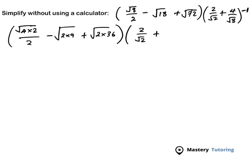Plus 4, which is written as 2 times 2, over 8. This 8 is going to be written the same as before — so this is going to be 2 times 4 under a square root sign, and then we put the power of negative 1 there.